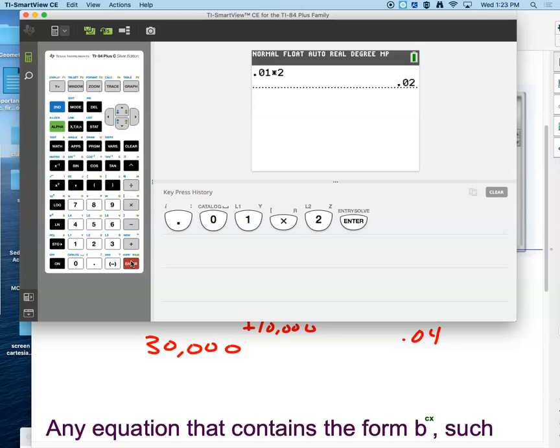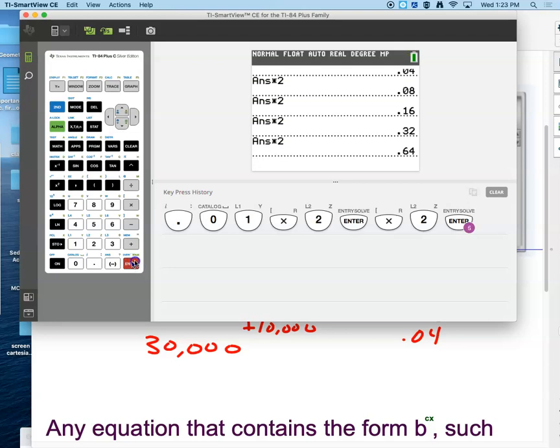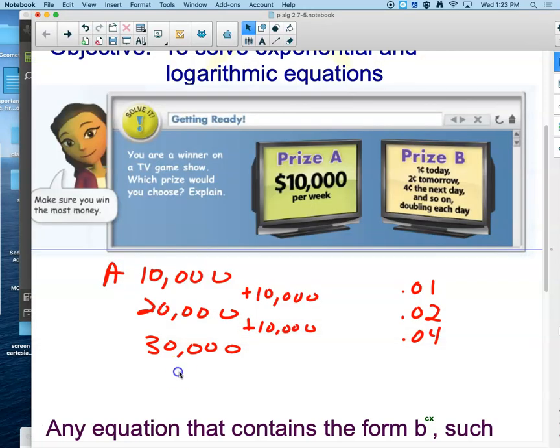So now there's the penny doubled. There's day two, day three, four, five, six, seven, eight, nine, 10, 11, 12, 13, 14, 15, 16, 17, 18, 19, 20, 21. Look at that. After the 21st day, we have over $10,000. 22nd, 23rd, 24th, 25th, 26th, 27th, 28th.